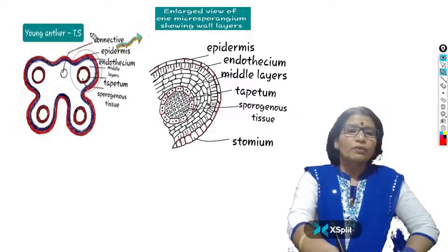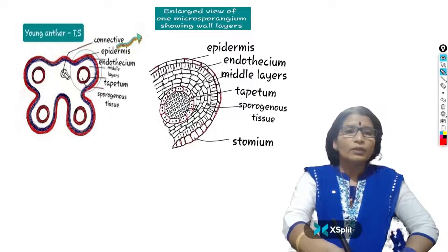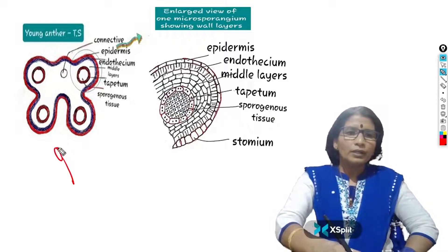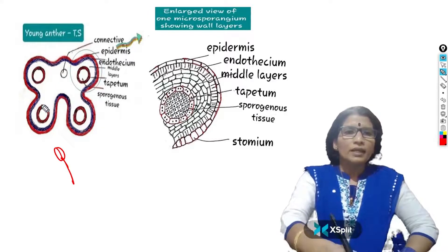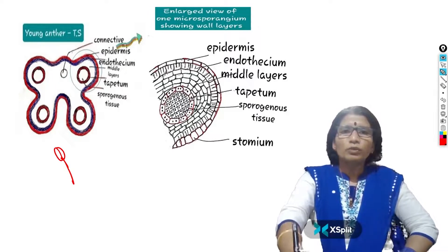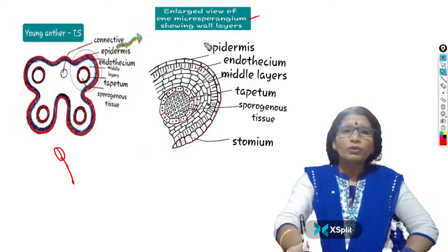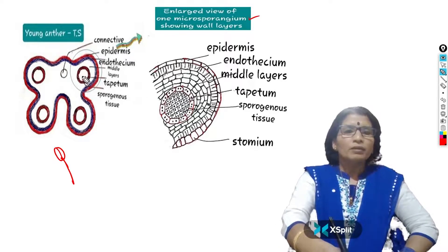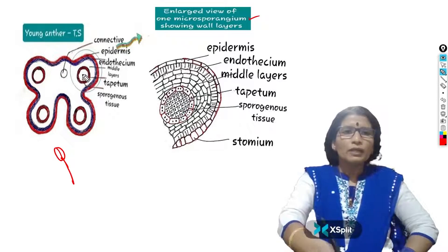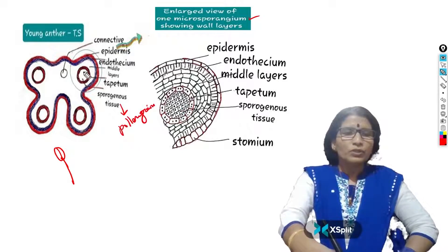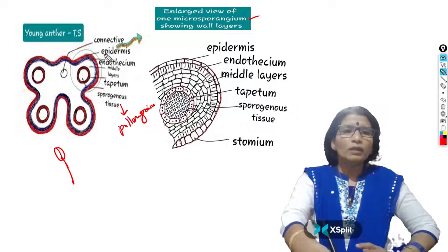This is the diagram representing the young anther transverse section. Here, this is the connective — wherever the anther attaches to the filament, that particular region is called the connective. Four pollen sacs are present; each pollen sac you can call a microsporangium. One enlarged view of the microsporangium is shown. In the middle, you can see a white-colored part filled with tissue called microsporogenous tissue. This microsporogenous tissue produces pollen grains. Around it, 4 wall layers are present from outer to inner.